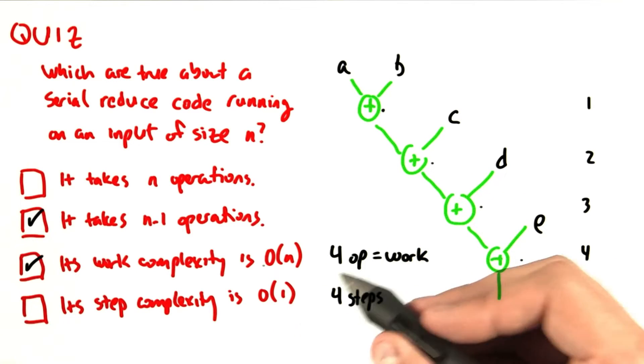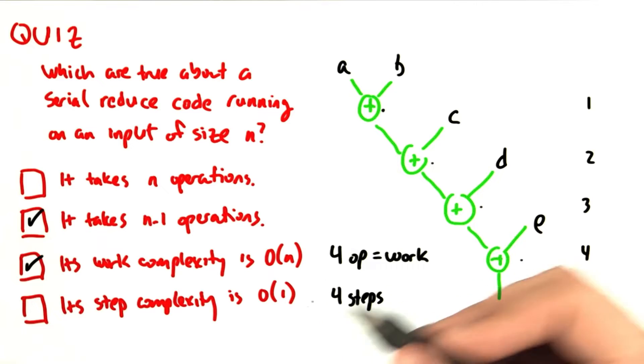So the amount of work that we do is linear with respect to the size of the input. If we double the size of the input, we're going to double the number of additions that we do.